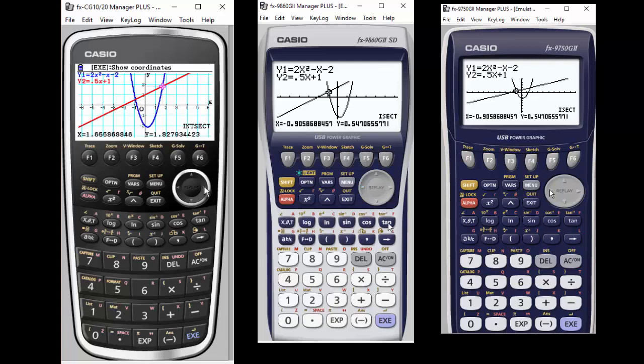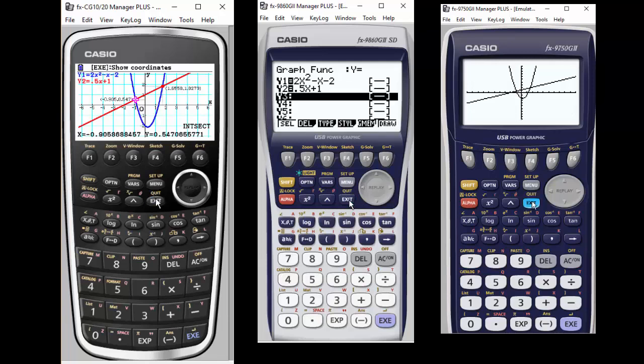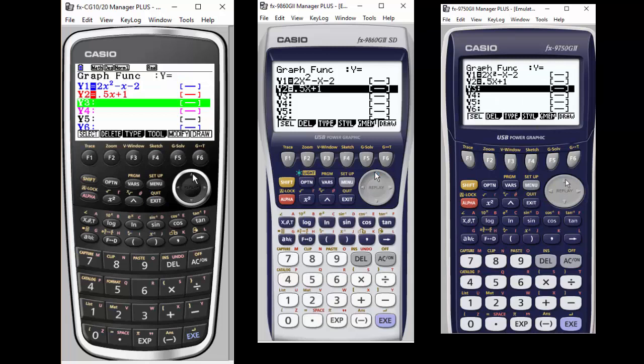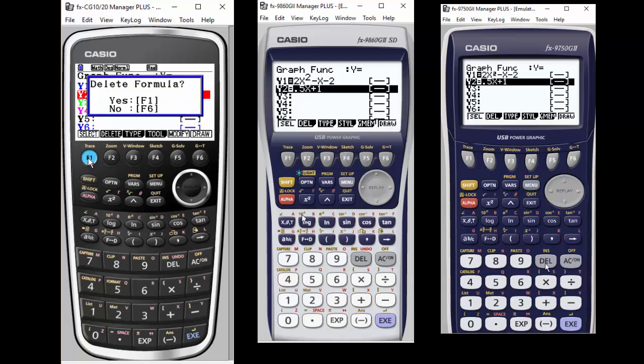I can toggle between the two intersections in this particular example. The difference with the Casio Prism is that I can actually set those points and show the coordinates on the screen. And I actually see my two graphs in different colors because of the color menu. But functionality-wise, they're pretty much the same.